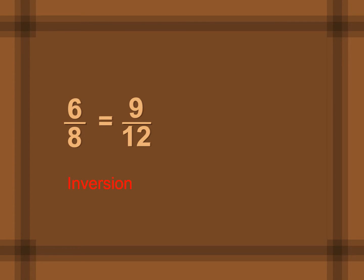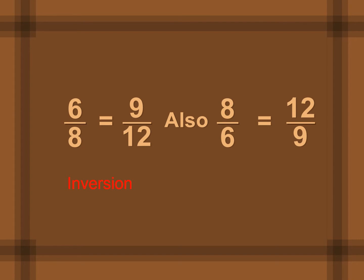We can rewrite proportions by rearranging the numbers. The first way is by inversion — taking the reciprocal of both fractions. So if we had 6 over 8 equals 9 over 12, and we invert both, we get 8 over 6 equals 12 over 9. Notice that even though we switched it, we're still multiplying 6 and 12 together, and 8 and 9 together — so we still get an equal proportion.